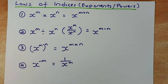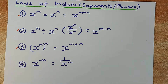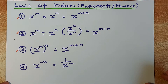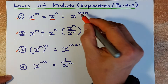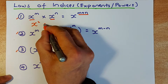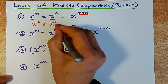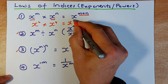There are three laws of indices, indicated as 1, 2 and 3. The first law: if you have the same base X and multiply, you add the powers. For example, X squared times X to the power of 4 — you add the powers, so 2 plus 4 gives you X to the power of 6.